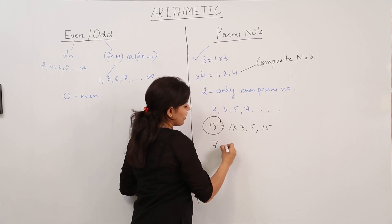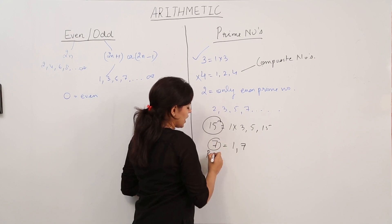Let's say 7. The factors of 7 are 1 and 7. So we can say that 7 is a prime number.